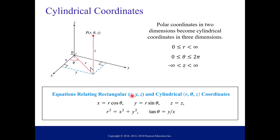Some equations relating Cartesian x, y, z coordinates to cylindrical coordinates are the following. Some of these we know from polar coordinates, and the only new thing really is just z equals z. But we need to know these conversion equations in order to go back and forth between rectangular or Cartesian and cylindrical coordinates.